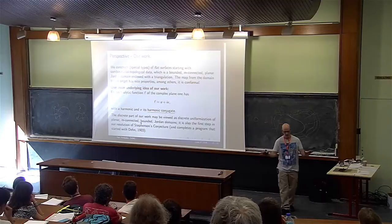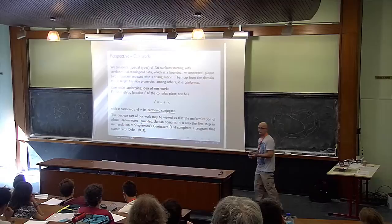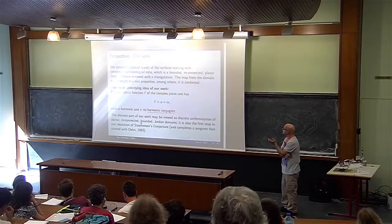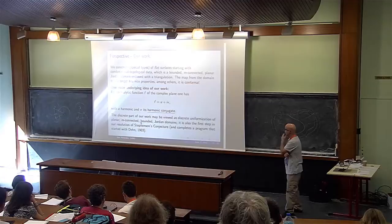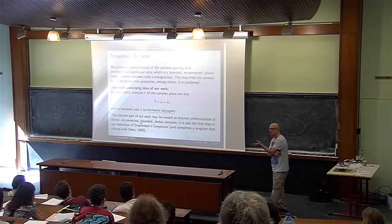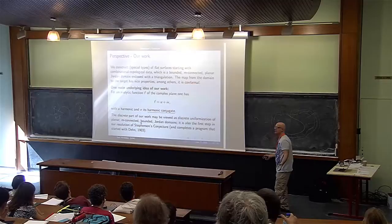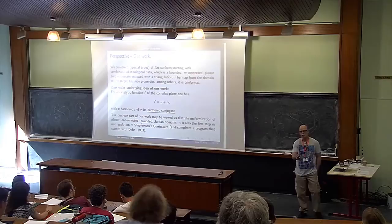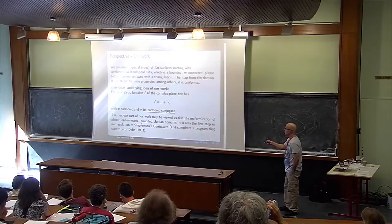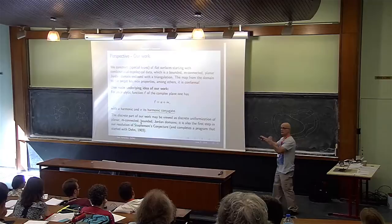What we do is construct a special type of flat surface starting with combinatorial topological data. The topological data is a bounded M-connected planar Jordan domain with a triangulation — nice enough in a way I'll explain. The map from the domain to its target should have nice properties, and nice here means conformal. The one main underlying idea is that a conformal analytic map defined on the whole complex plane can be written as a sum U plus iV.